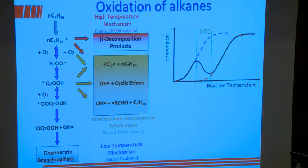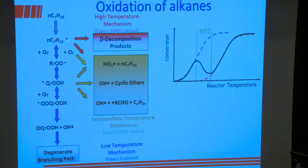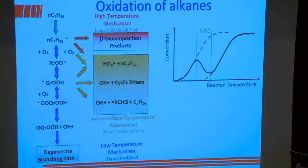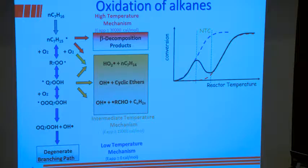That HO2 is then abstracting a hydrogen atom from a stable molecule — mostly the fuel, but other stable species in the system — generating H2O2 (hydrogen peroxide), which then decomposes to give two hydroxy radicals, giving us chain branching. The concentration of HO2 formed is proportional to the concentration of RO2, which is proportional to the concentration of fuel radicals, which is proportional to the concentration of the fuel. At intermediate temperatures, due to the proportional formation of HO2, and at low temperatures, due to the proportional formation of OH radicals.